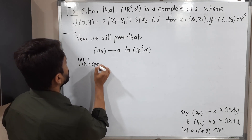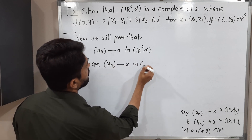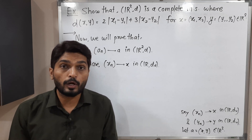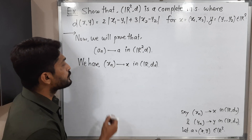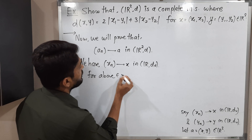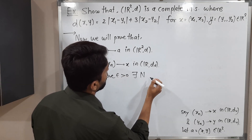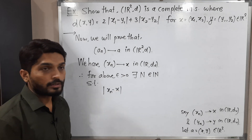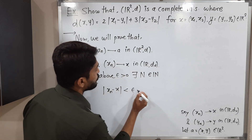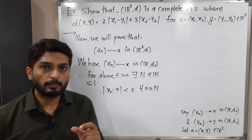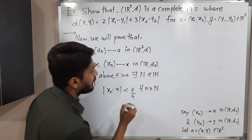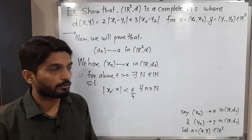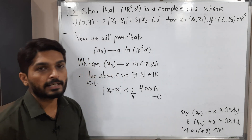We have {xₙ} converging to X in ℝ with usual distance. By definition of convergent sequence, for the above ε > 0, there exists a natural number N₁ such that |xₙ - X| < ε/4 for all n ≥ N₁. I am using ε/4 here as a part of adjustment, since epsilon denotes a very small positive real number and ε/4 has the same meaning.